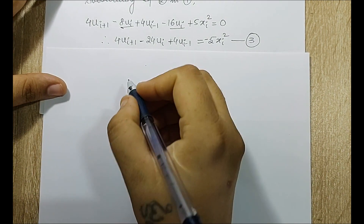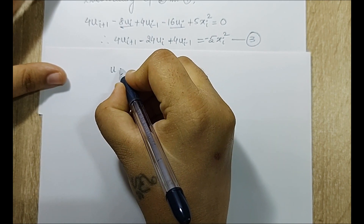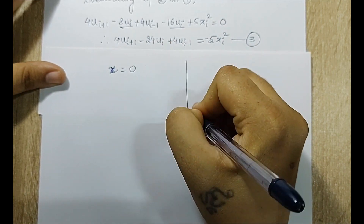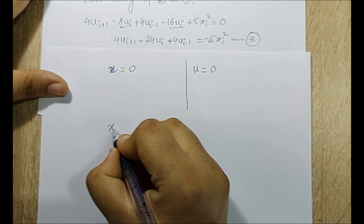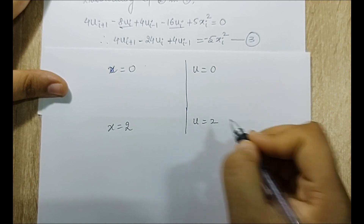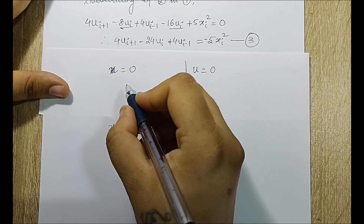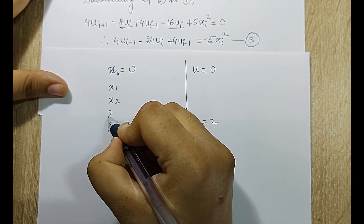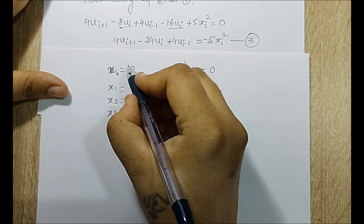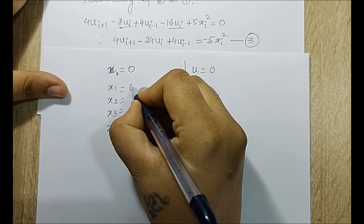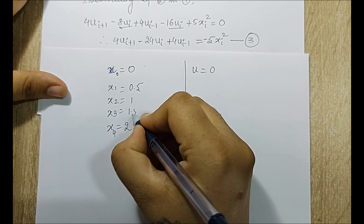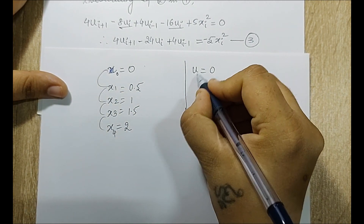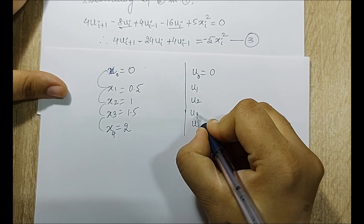Before iterating, I write down the boundary conditions: when x = 0, u = 0; when x = 2, u = 2. With 4 intervals and h = 0.5, the nodes are x₀ = 0, x₁ = 0.5, x₂ = 1, x₃ = 1.5, x₄ = 2, with corresponding values u₀, u₁, u₂, u₃, u₄.